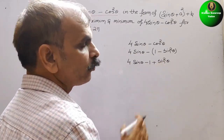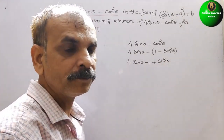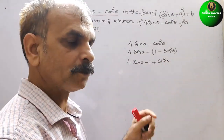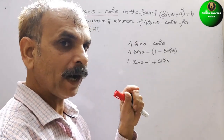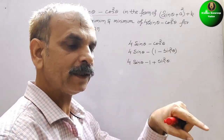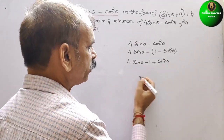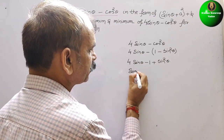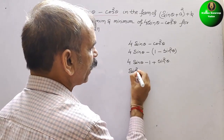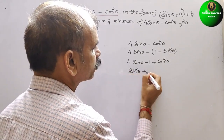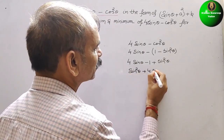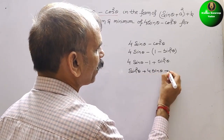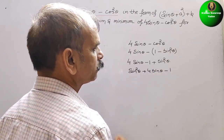Now arrange this in the form where the power is in decreasing order. So it becomes sin square theta plus 4 sin theta minus 1.